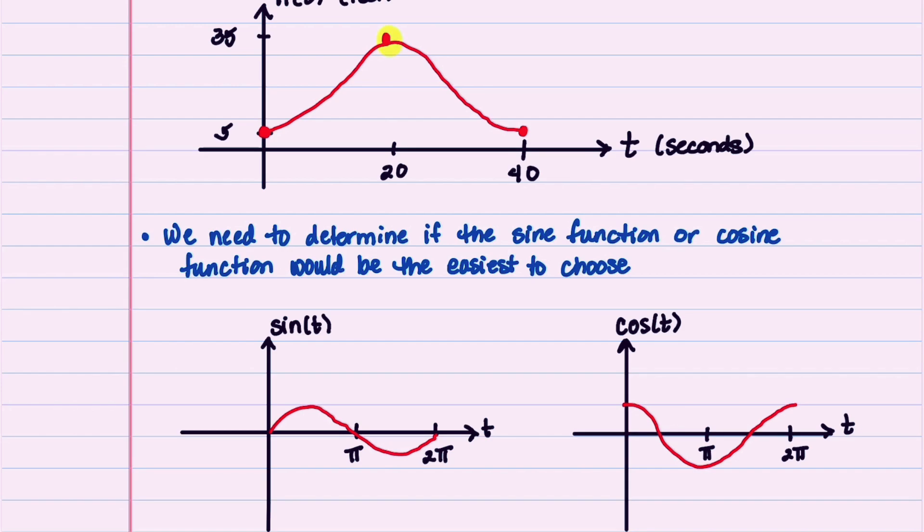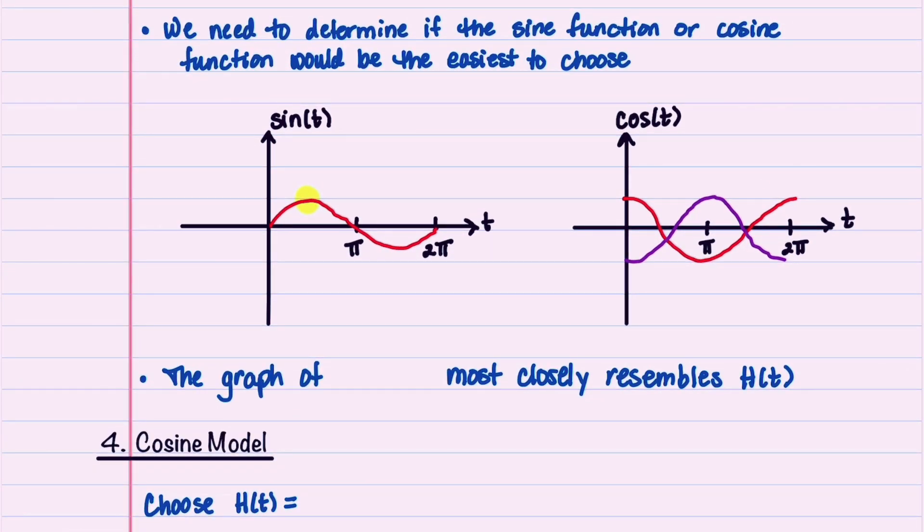Our graph h of t looks like sine t if sine t were shifted to the right. Our graph of h of t looks like cosine t if it were flipped upside down. We'll label this as minus cosine t, so the graph of minus cosine t most closely resembles the graph of h of t.